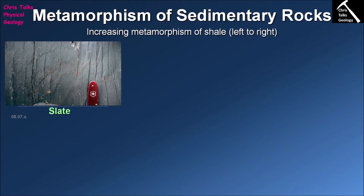When we discuss metamorphic rocks, we typically talk about the metamorphism of two main rock groups. The first group are sedimentary rocks which are very rich in aluminium silicate minerals, especially clays. The other group are rocks which are basalts or were originally basalts, because these two groups are very prone to changes in metamorphic minerals as temperatures and pressures change.